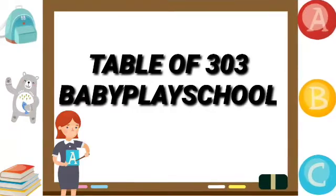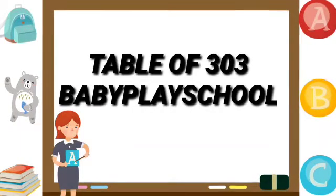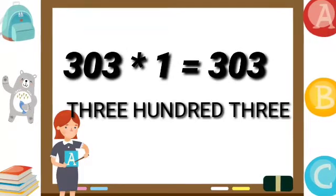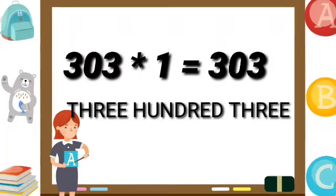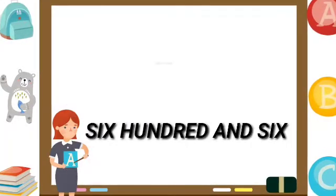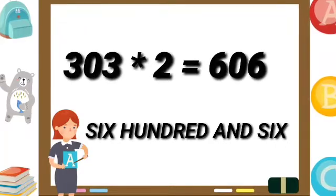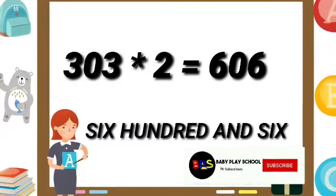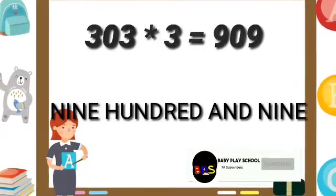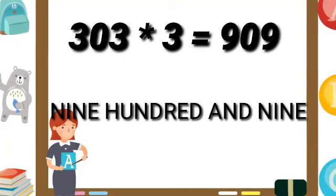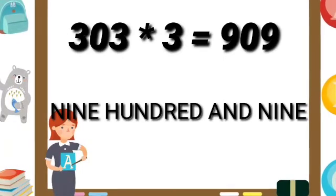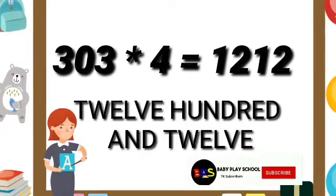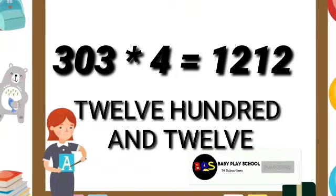303 ones are 303. 303 2s are 606. 303 3s are 909. 303 4s are 1212.